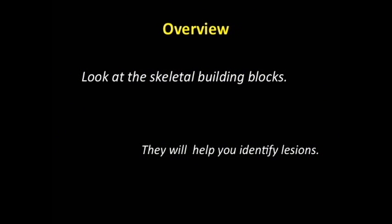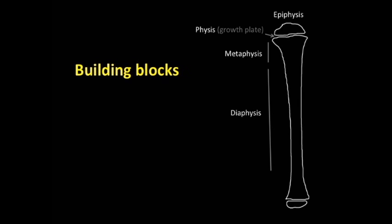The way I want to structure this talk is to think about the growing bones and joints of kids as building blocks. This is a great analogy when we think about kids. If you think about the skeletal system in kids as building blocks, they will help you identify lesions. We think about the basic units of a long bone: the epiphysis, the physis, the metaphysis, and the diaphysis. If you break it down into these building blocks, you can methodically go through the skeletal system and form a relatively rational differential for the lesion you might be looking at.